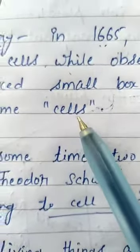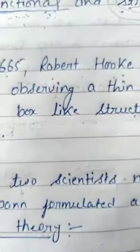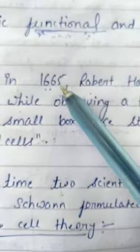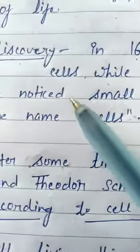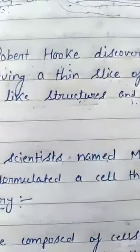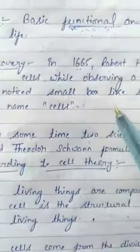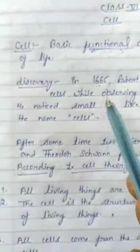In 1665, when Robert Hooke was observing a thin slice of cork under the microscope, he observed a small box-like structure, and these small box-like structures are known as a cell. He gave the name to these small box-like structures as a cell. So small box-like structures are known as cells.